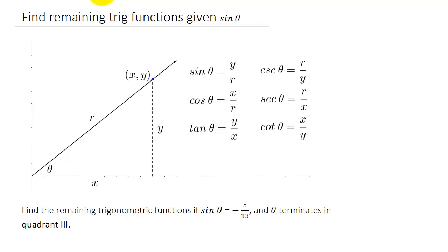In this video we're going to look at finding the remaining trigonometric functions if we're given the value of one trigonometric function. In this case we're going to be given sine, but it wouldn't matter which one we're given — they would all be worked the same. I may do a couple more videos where I'm given cosine, secant, or cosecant, but in this one we're going to be given sine theta.